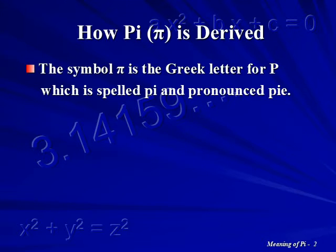The symbol for Pi is the Greek letter for P. It is spelled P-I and is pronounced pie. The first use of Pi is attributed to the Greek mathematician Archimedes in 250 BC. British mathematician William Jones was the first to use the Greek letter for Pi in 1707.